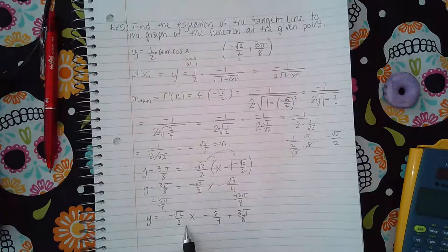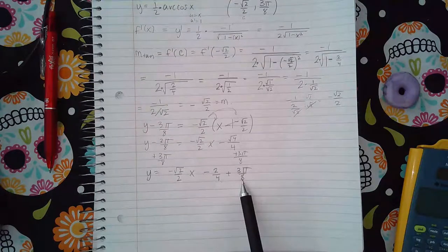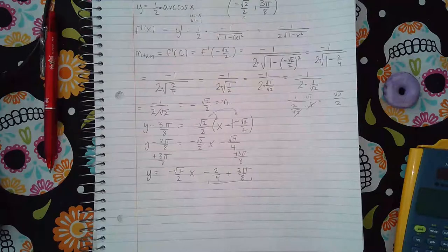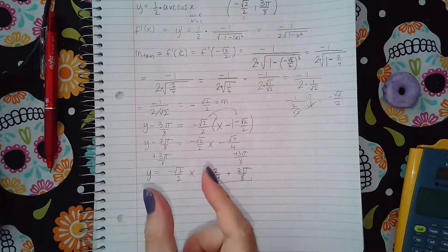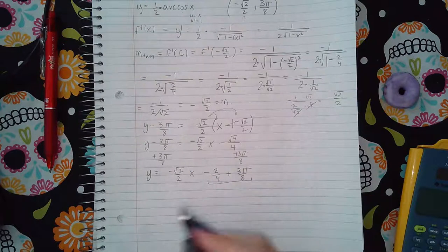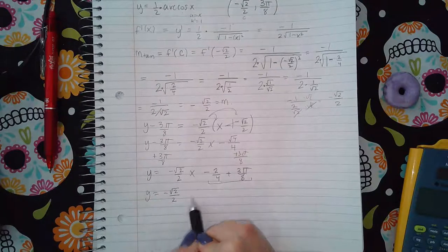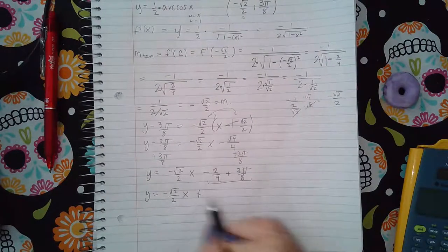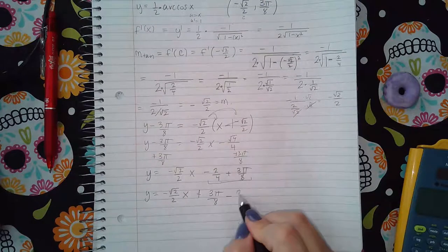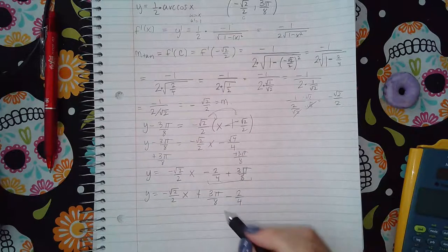I get negative square root of two over two x, and this becomes negative two over four plus three pi over eight. Now this is the variable term, both of these two terms are constant terms, and the computer does show them as one giant fraction. So the first thing I want to do is I'm going to switch them because you do want plus in the middle there. So we're going to have three pi over eight minus two over four.